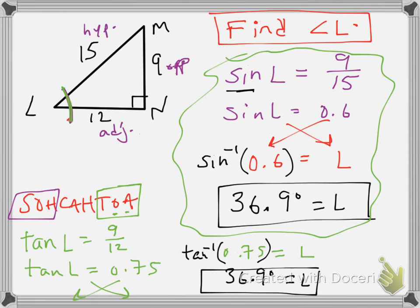And you know what? I think inverse cosine of 12/15, the other ratio, is probably also going to be 36.9 degrees. And it is.